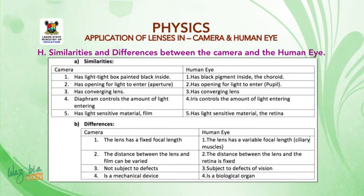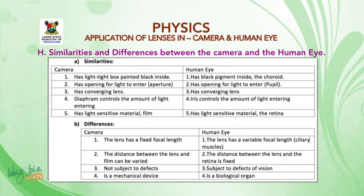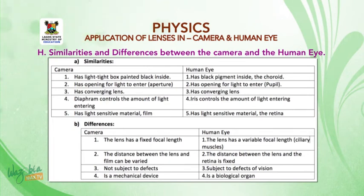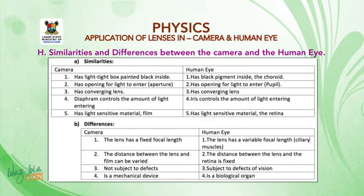Similarities and differences between the camera and the human eye. Similarities: 1. Camera has a light-tight box painted black inside; the human eye has a black pigment inside — the choroid. 2. Camera has an opening for light to enter through the aperture; the human eye has an opening through the pupil. 3. Both camera and human eye have a converging lens. 4. The diaphragm controls the amount of light entering the camera; the iris controls the amount of light entering the eye. 5. Camera has sensitive material — the film; the human eye also has sensitive material — the retina.